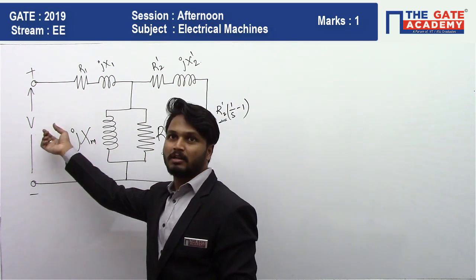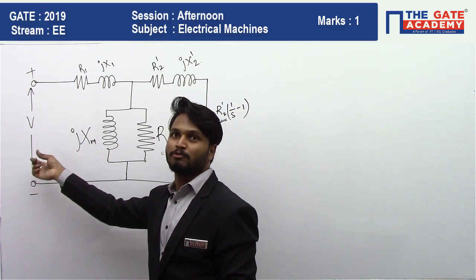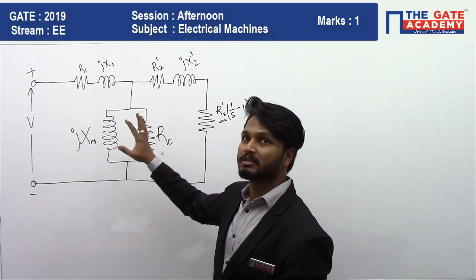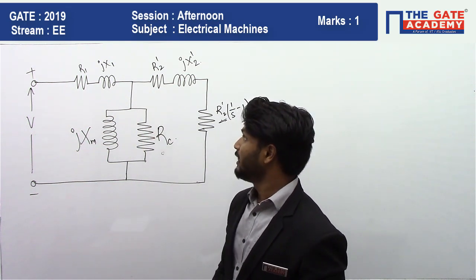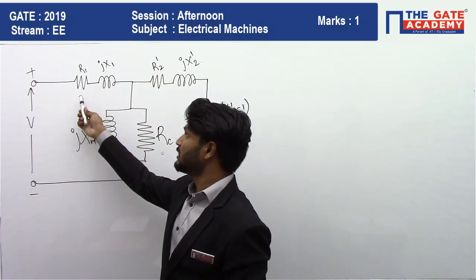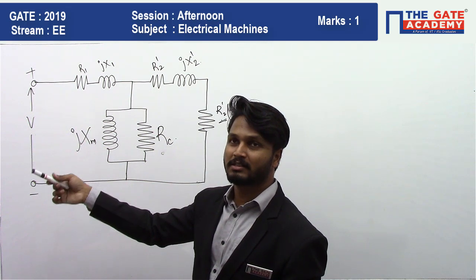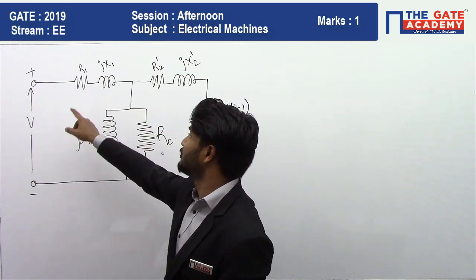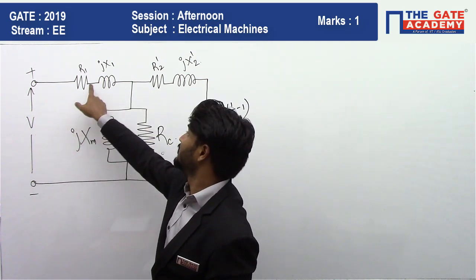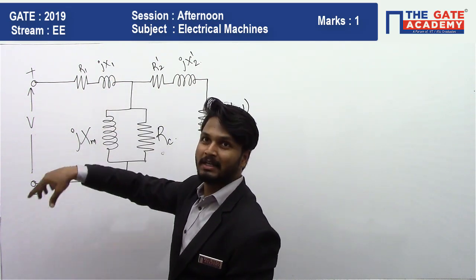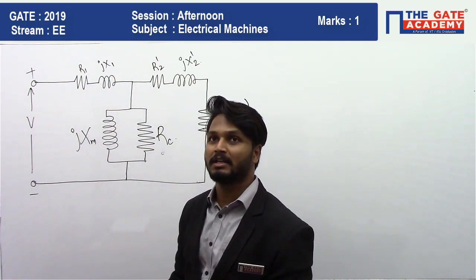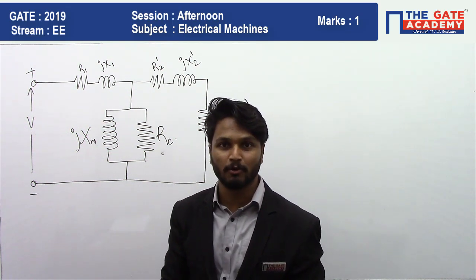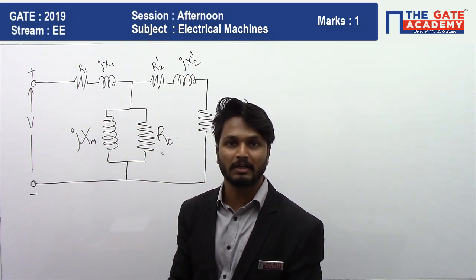If we increase or decrease the voltage, only the current through these elements changes. R1, the stator winding resistance, is a physical property of the winding and does not depend on voltage. The stator leakage reactance X1 is completely dependent on frequency and the physical construction of the machine.